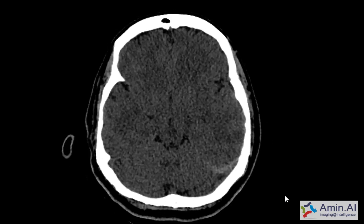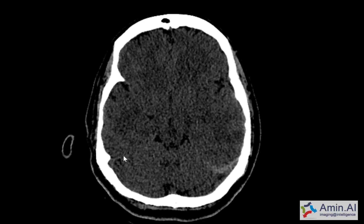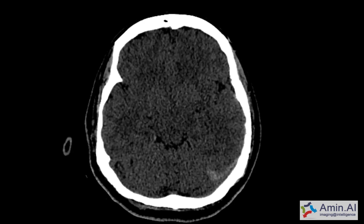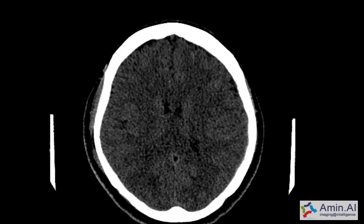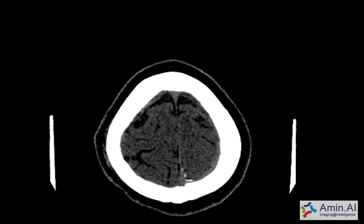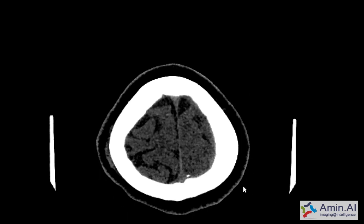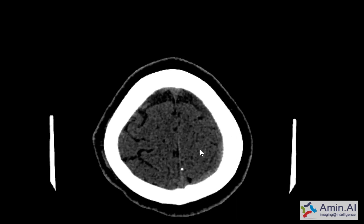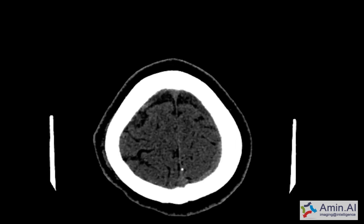Another finding is a subtle hyperdensity here which is not seen on the contralateral right side. As I move up into the upper parts of the brain, you will appreciate a mild difference between the sulci on the right side and the sulci on the left side, with relative effacement.